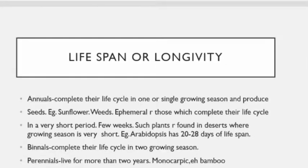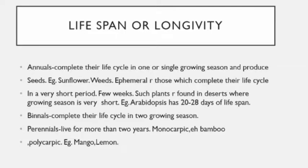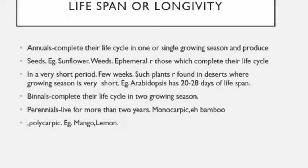Longevity of plants: unlike animals, plants do not have a definite lifespan. They grow indefinitely due to the presence of apical and axillary buds, and continuously produce new roots, branches, leaves, flowers, and fruits. Depending upon their lifespan, plants can be categorized into three types: annuals, biennials, and perennials.